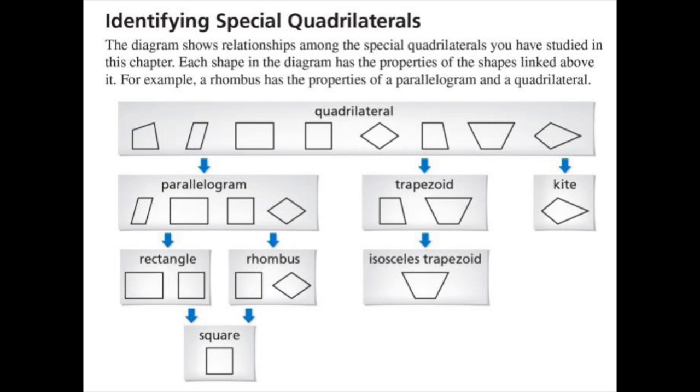All right, the diagram. This diagram shows relationships among the special quadrilaterals you've studied in this chapter. Each shape in the diagram has the properties of the shapes linked above. For example, a rhombus has the properties of a parallelogram and a quadrilateral.